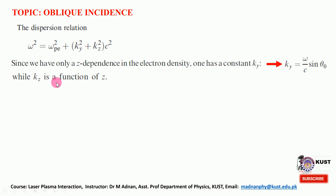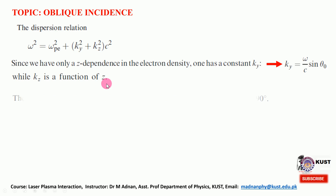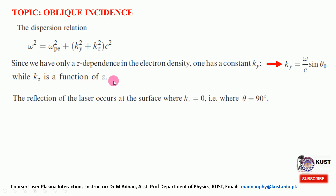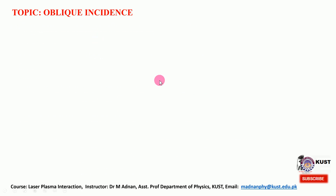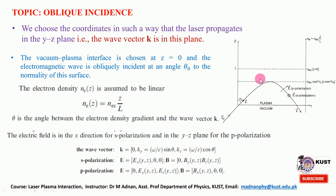Because kz changes, the cutoff points and reflection point will change. The plasma dielectric function changes, and the point where the plasma dielectric function goes to zero — where omega equals omega_p and the wave reflects — all those things will change. Once kz is a function of z, the reflection of the laser occurs at the surface where kz equals zero.